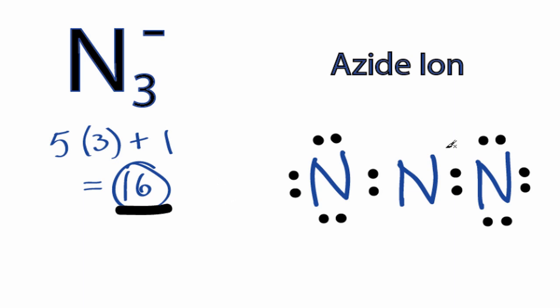The nitrogens on the outside have full outer shells, they have octets, but the nitrogen in the center only has 4 valence electrons.